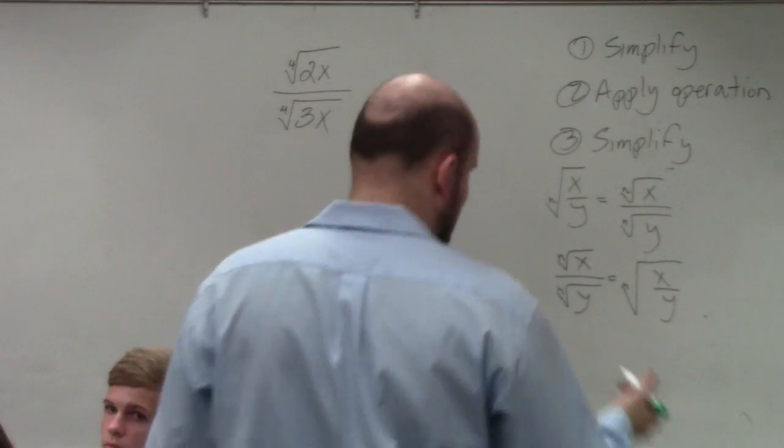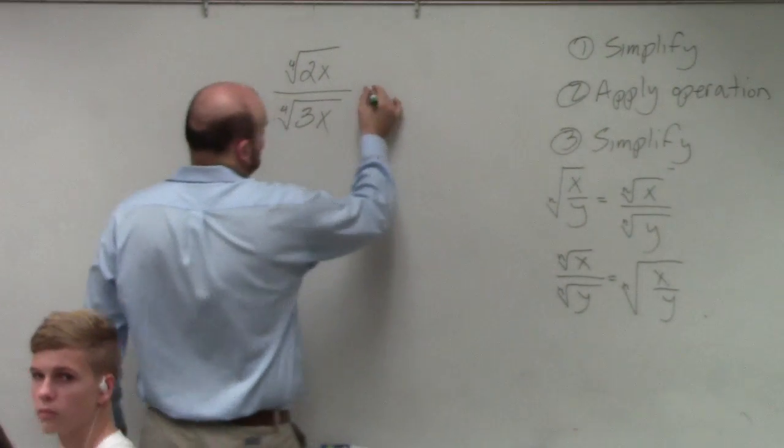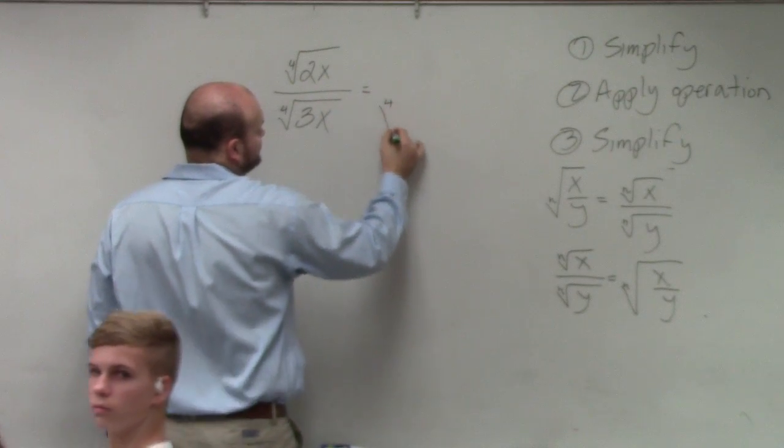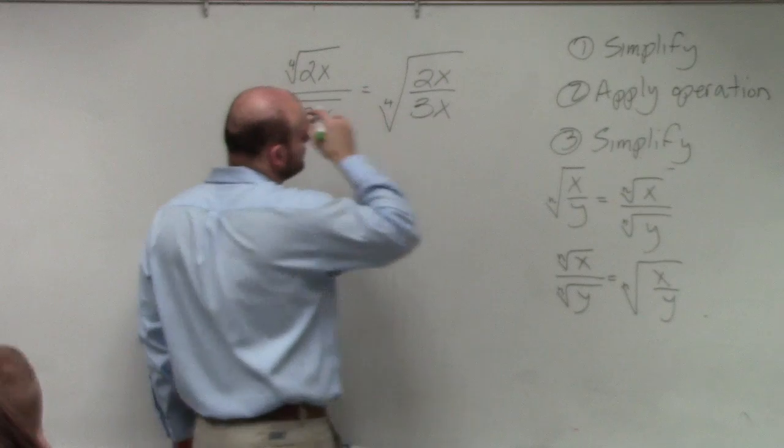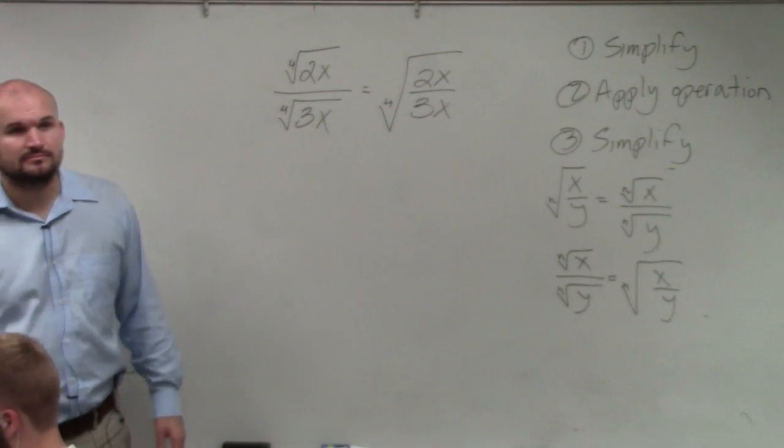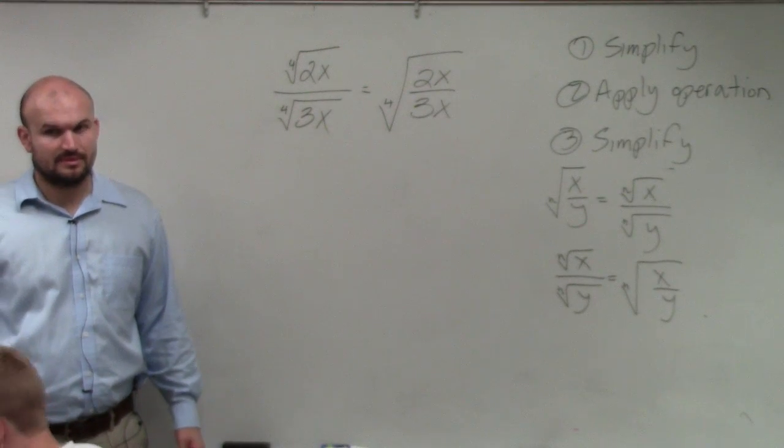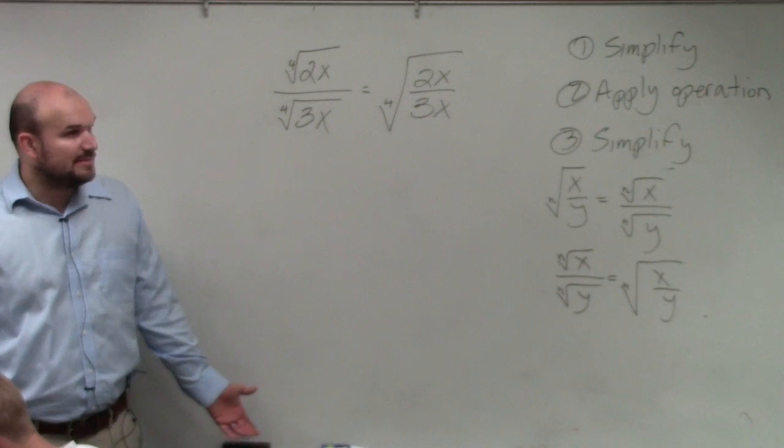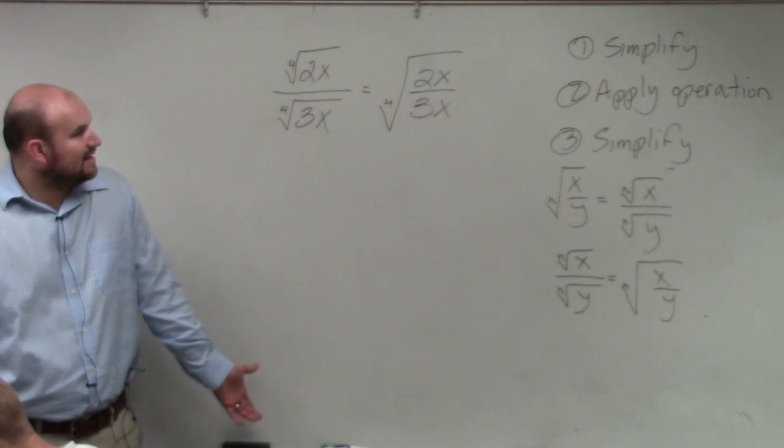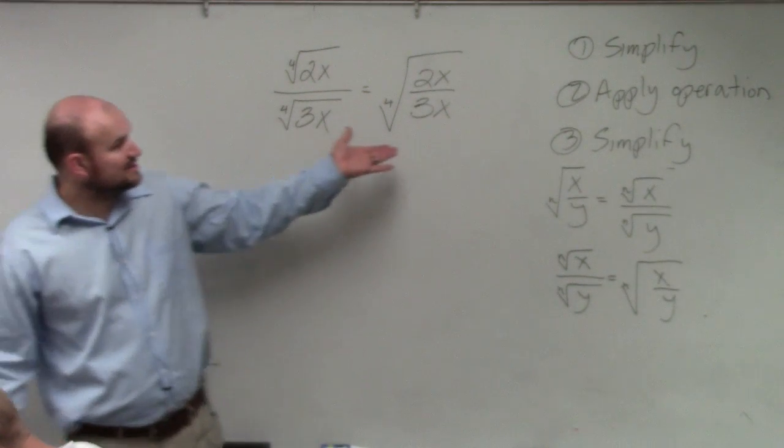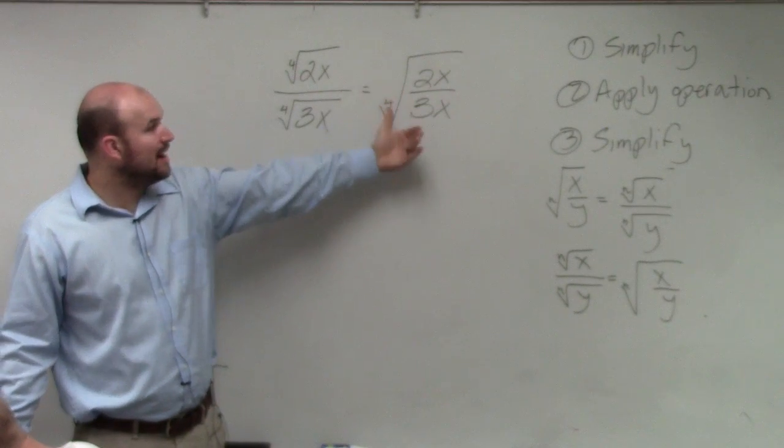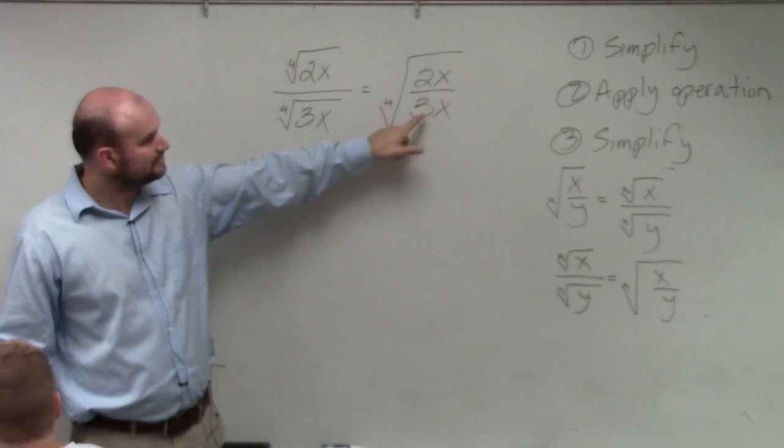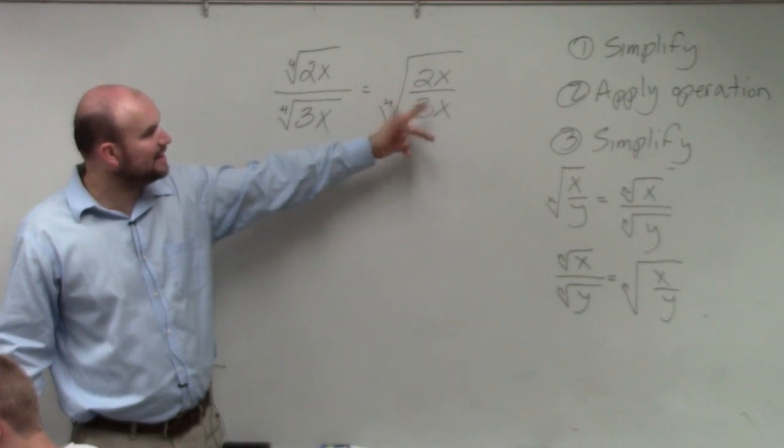So in the last problem, what we did was we rewrote this as one radical. And what happened with rewriting that as one radical was that simplified everything, and then we are done. The problem with this is when we're doing it this way...